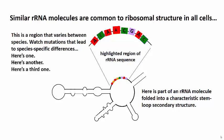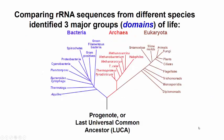When these small ribosomal subunit rRNAs, or ribosomal RNAs, for many different species are compared, it's possible to group the species by how close their rRNA sequences are. This is a molecular taxonomy.